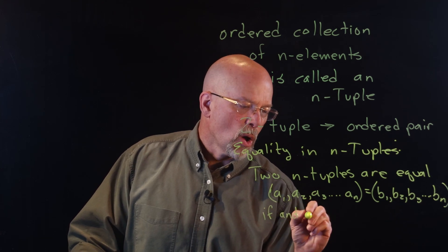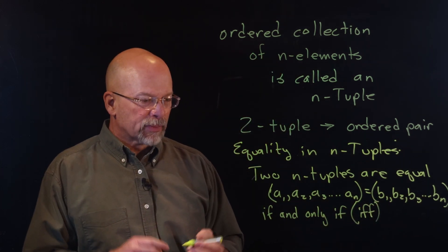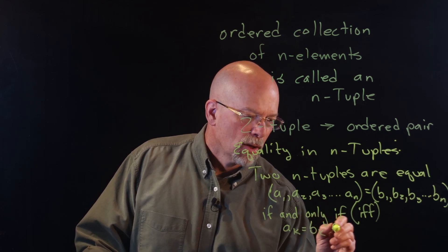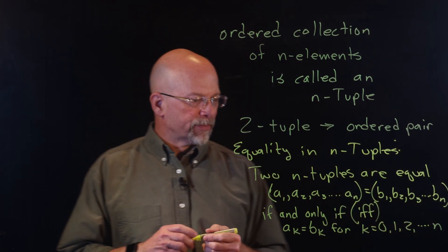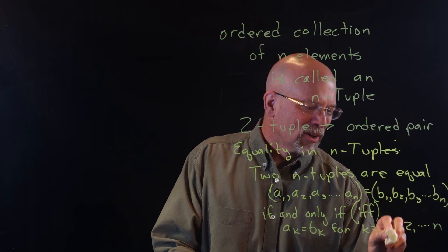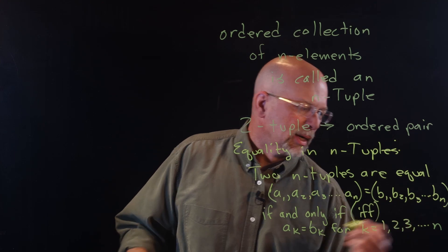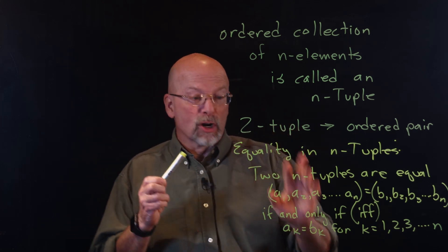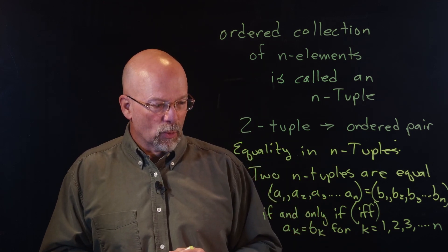If and only if, and this is going to be abbreviated with IFF, if and only if, aₖ is equal to bₖ for k equal to 1, 2, 3, all the way up to n. You switch any two elements, you don't have equality. If those two elements are different, for example, if a₂ is a 5 and a₃ is a 2, you swap them, suddenly you don't have equality anymore.